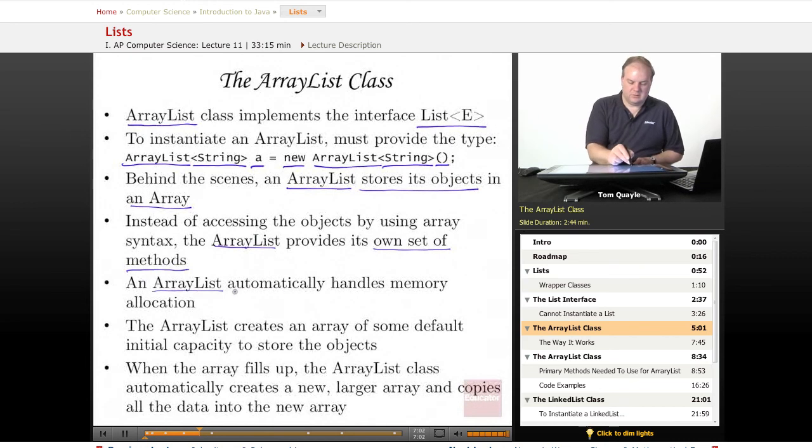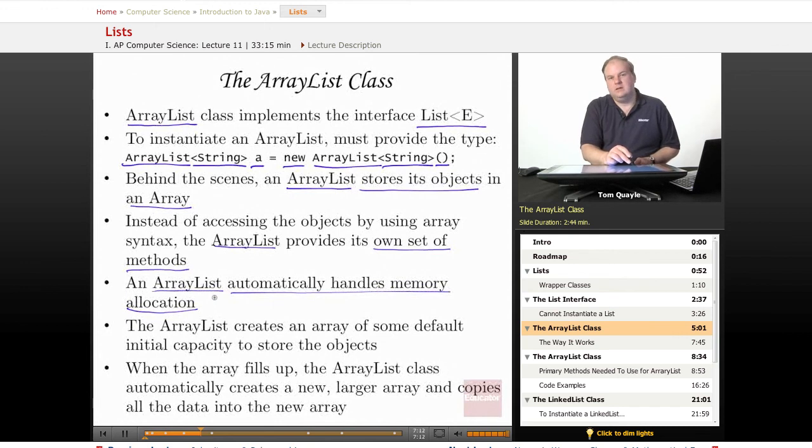The ArrayList automatically handles memory allocation. And this is very convenient when you're storing an unknown number of objects. When you declare an array, you need to provide the number of items or the size of the array sufficient to store the number of items that you're going to want to put in the array. And if you fill up the array, then, as we saw in the lesson on Arrays, you need to declare a new array.